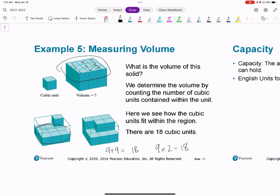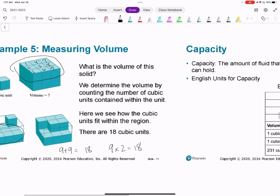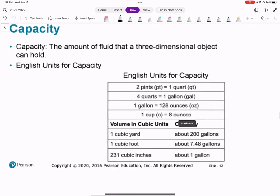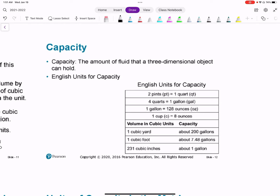Units for capacity. These are English units of capacity, usually for liquids or fluids. 2 pints equals 1 quart. 4 quarts equals 1 gallon. 1 gallon equals 128 ounces, and 1 cup equals 8 ounces. You usually use that for cooking. Volume in cubic units: 1 cubic yard is about 200 gallons, 1 cubic foot is about 7.48 gallons, and 231 cubic inches is about 1 gallon.